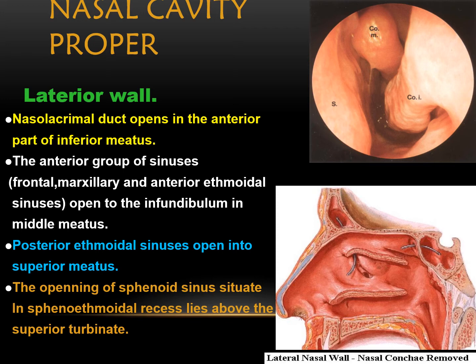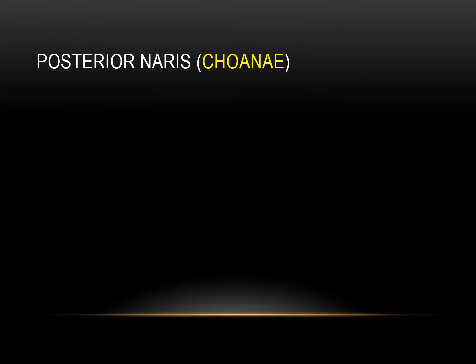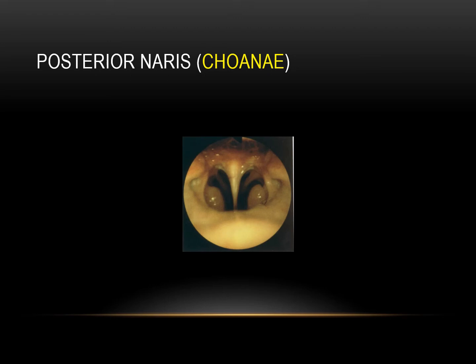The opening of the sphenoid sinus is situated in the sphenoethmoid recess, above the superior turbinate. To summarize: the inferior meatus has the opening of the nasal lacrimal duct; the middle meatus has the openings of the anterior sinus group — frontal, maxillary, and ethmoid sinuses; the superior meatus has the openings of the posterior ethmoid sinuses; and the sphenoethmoid recess above the superior turbinate has the opening of the sphenoid sinus. Posteriorly, we have the choanae, bounded in the middle by the nasal septum and on both sides by the inferior turbinates.